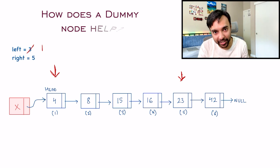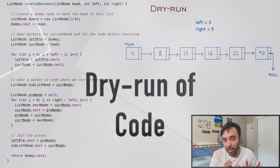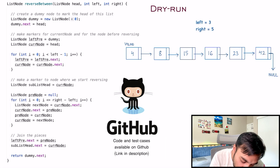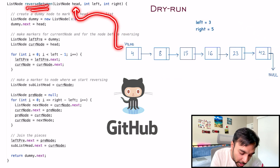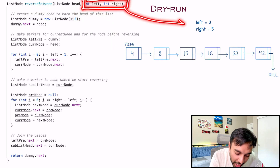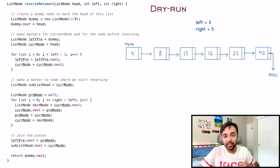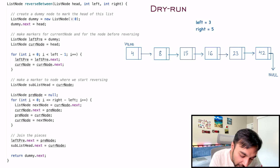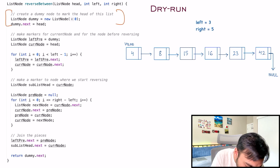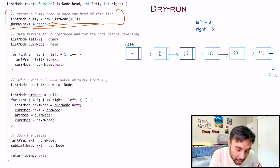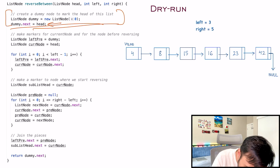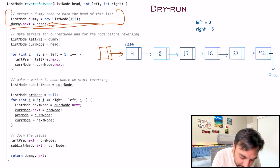Let's quickly do a dry run now. On the left side of your screen you have the actual code to implement this solution, and on the right I have a sample test case. The head is passed as an input parameter to the function reverseBetween, along with the left and right position indexes — these are position indexes, not values. First we create a dummy node and assign dummy node.next to our head, so a dummy node gets created and its next is assigned to the head.